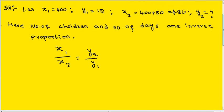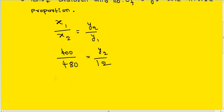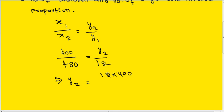Substitute the values: 400 divided by 480 equals y2 divided by 12. So y2 equals 12 multiplied by 400, divided by 480.